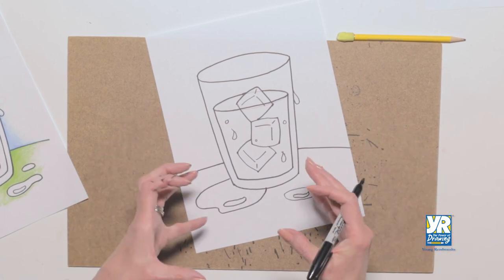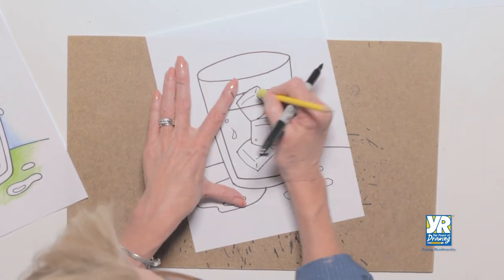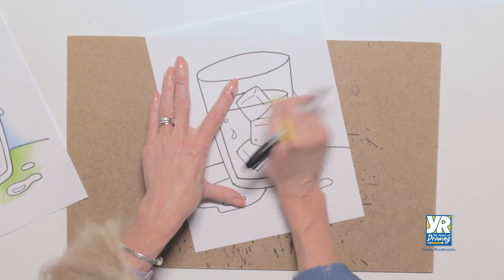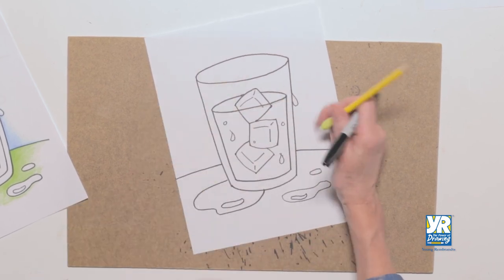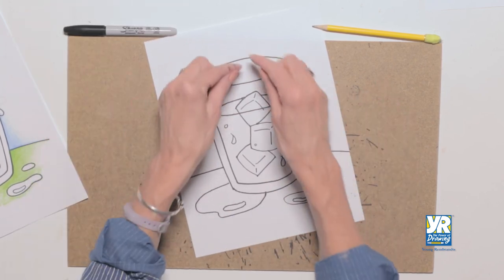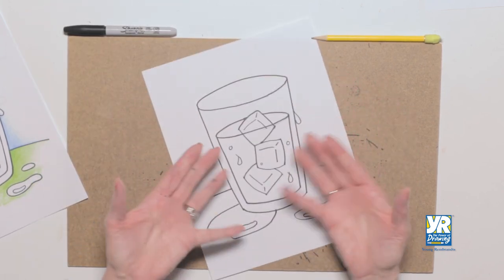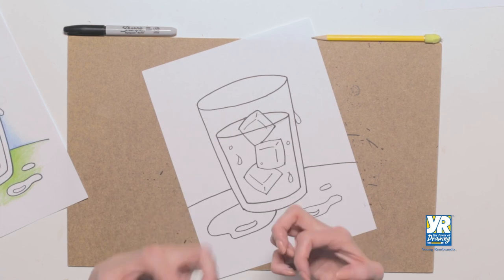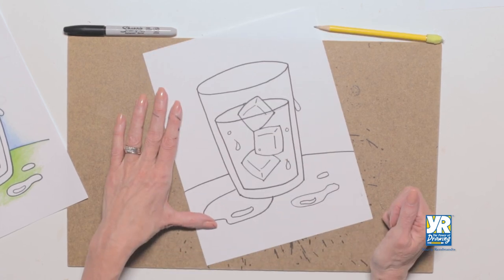But now I'm gonna put some color. Oh wait. I'm gonna erase. Let me erase my guideline. Good. Now we're gonna put some color on it but our color is gonna go around our glass to make the see-through transparency pop. Ready? Go.